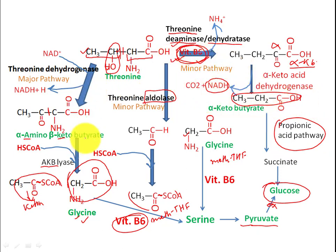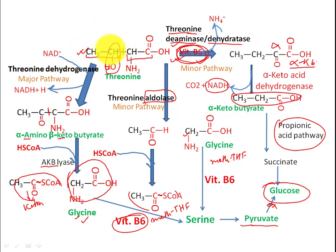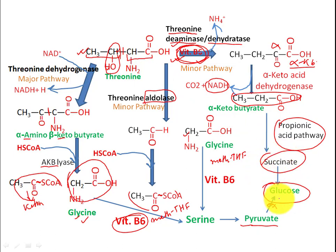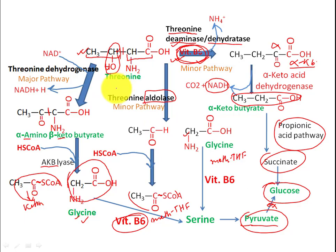Remember: just focus on the initial reactant, the final product, and the structure. If you remember the structure, the products will stick in your mind easily. This is how threonine produces succinate and glucose through pathway three, and pyruvate leading to glucose through pathways one and two. Thank you for watching this video.